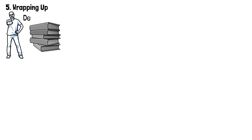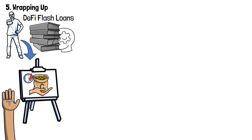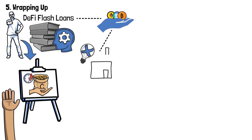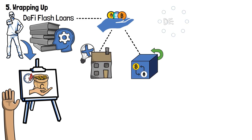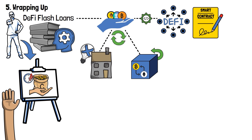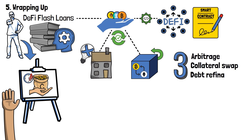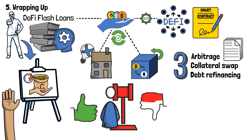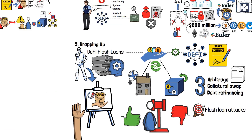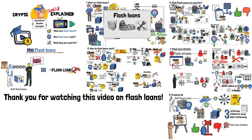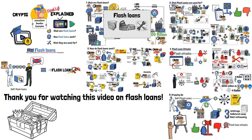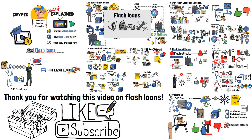To recap: DeFi flash loans are crypto loans that don't require collateral and must be returned within the same blockchain transaction. DeFi platforms employ smart contracts to ensure that the process of acquiring and repaying the loan goes smoothly. While this feature is mainly used for arbitrage, collateral swap, and debt refinancing, there are many more options. Flash loans come with their own benefits and disadvantages, with flash loan attacks being one of the main downsides. Thank you for watching — if you liked this animated explainer, give it a thumbs up, comment, and subscribe to Crypto Finally Explained.